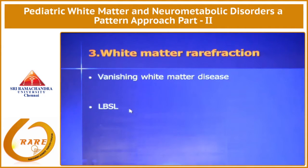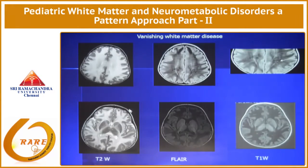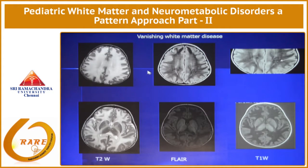And LBSL, which is another one I'll show you. So this is a child who came with deterioration after a viral illness — some of these conditions, especially this one, can occur with that history.